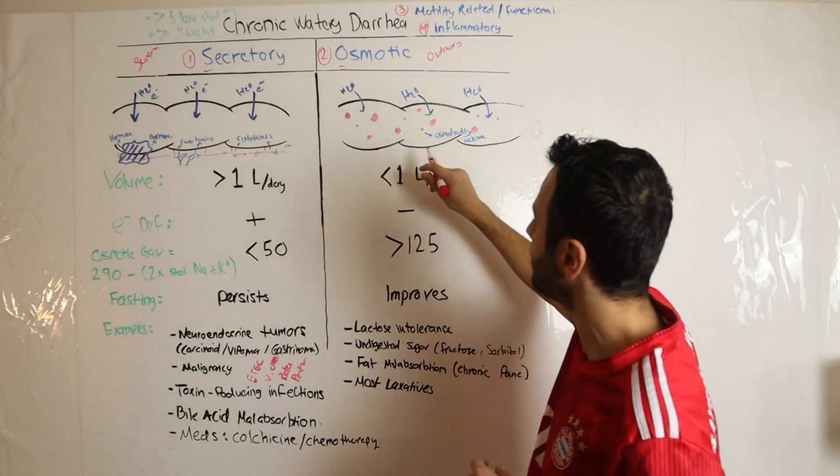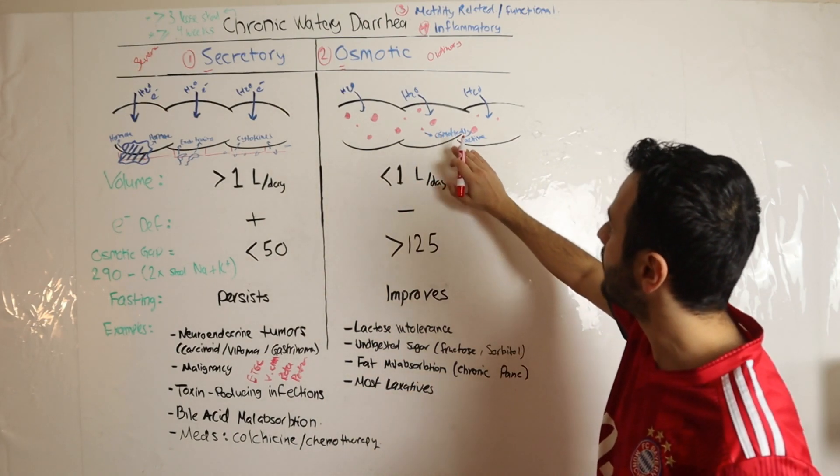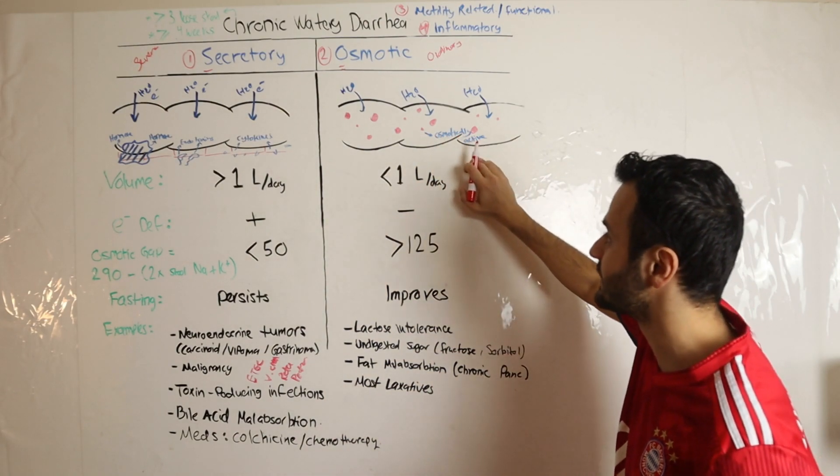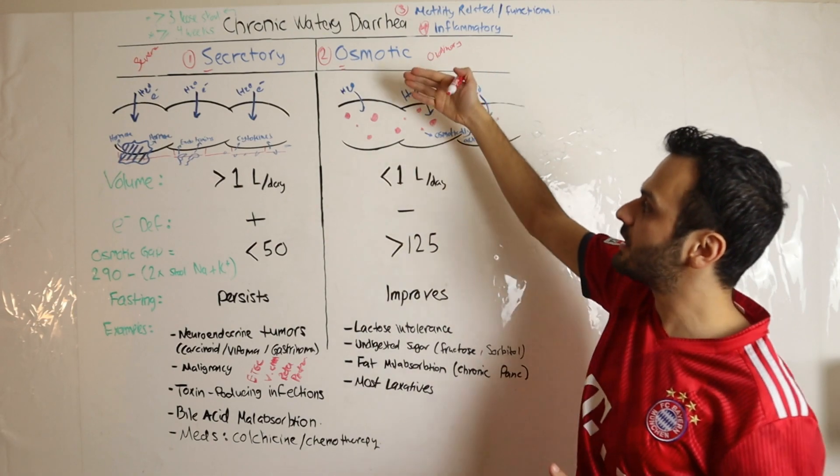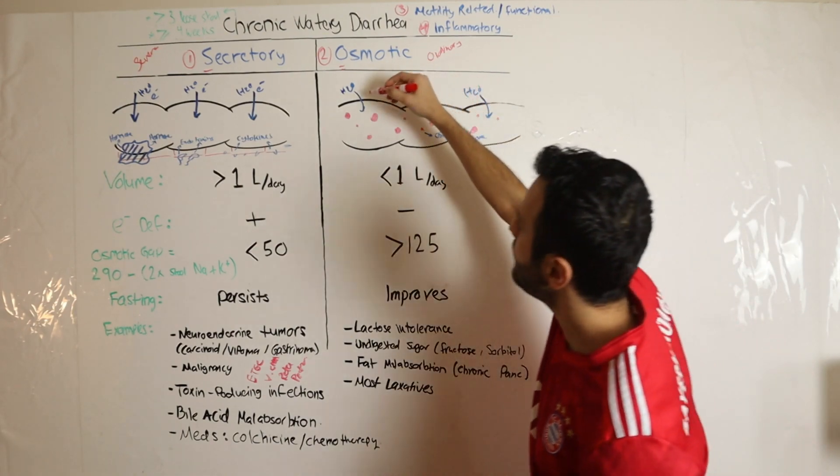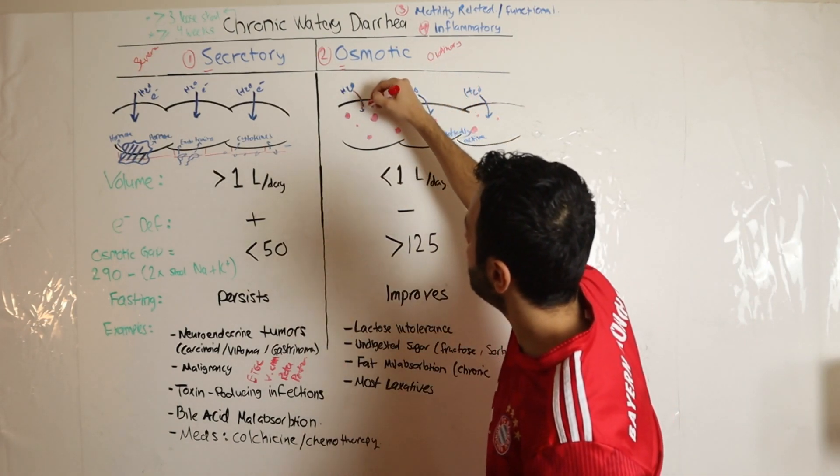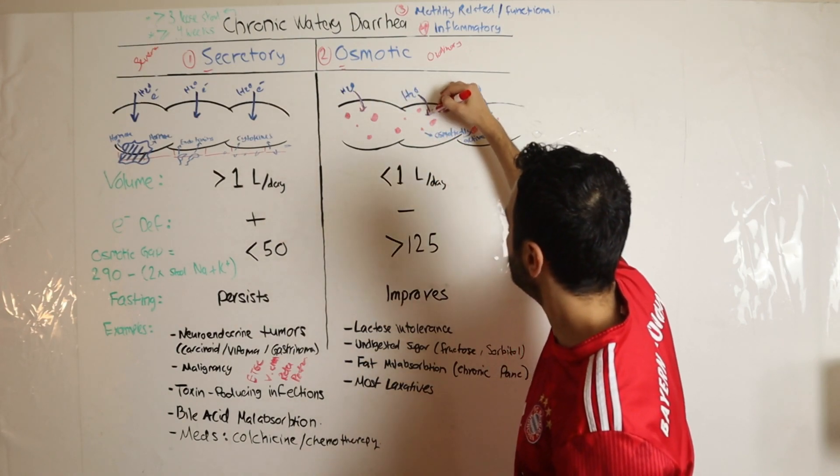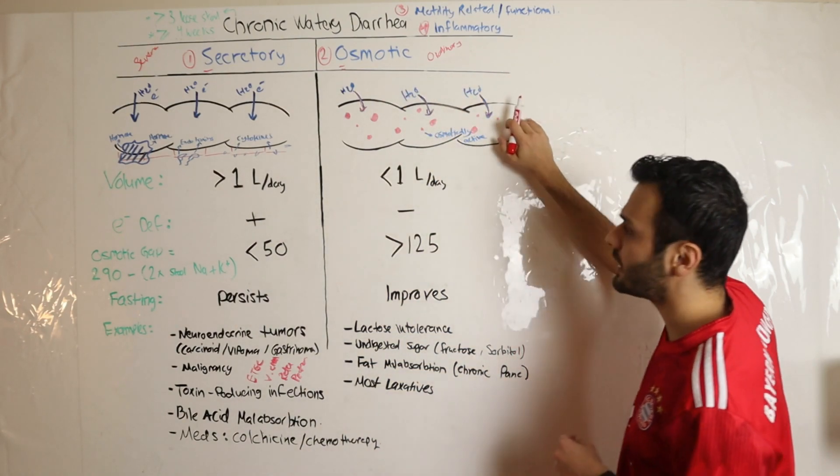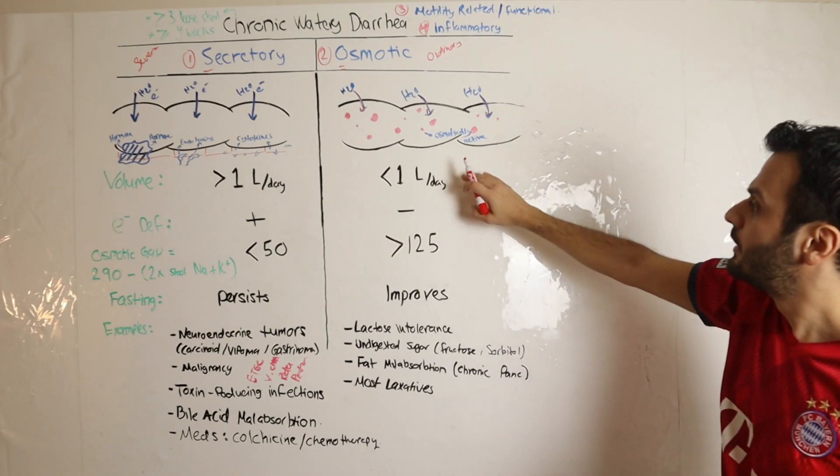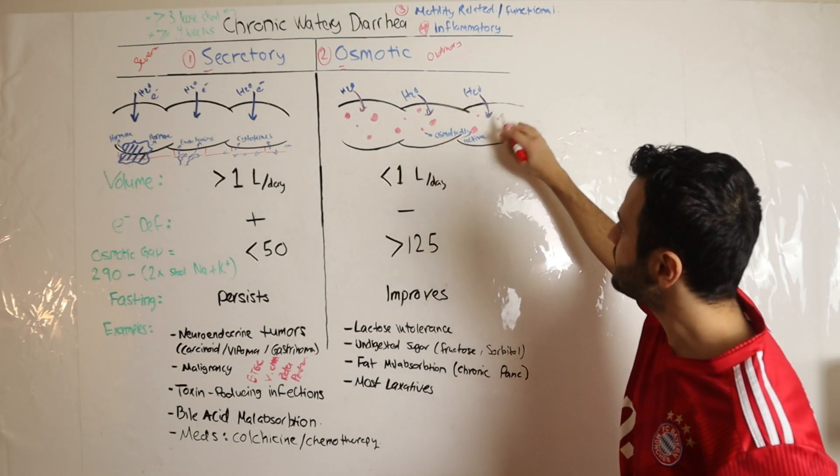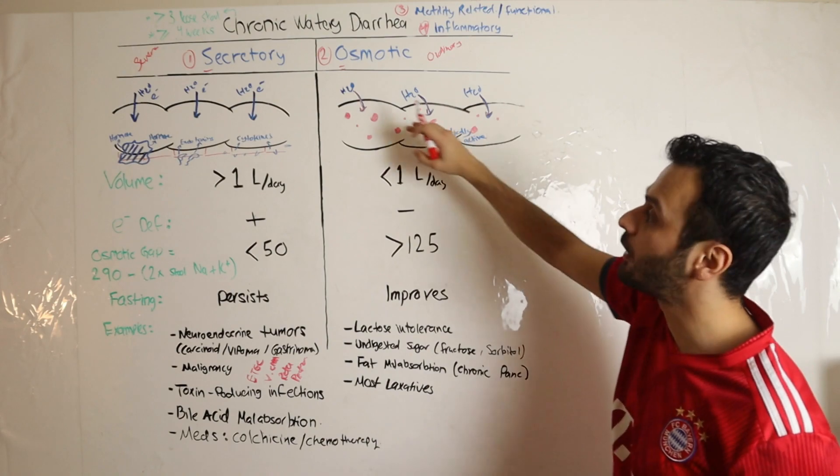This causes a heavy osmotic gradient favoring the influx of water into the lumen of the GI tract, thus causing the diarrhea. Now, this osmosis will only draw water but not electrolytes.